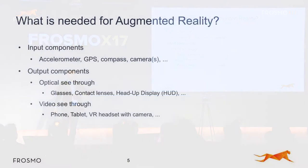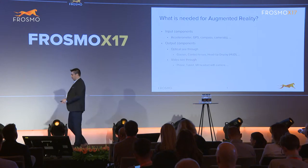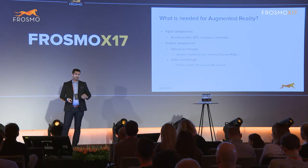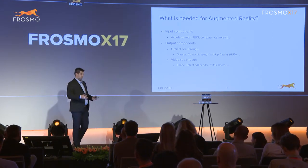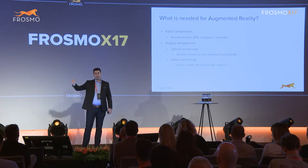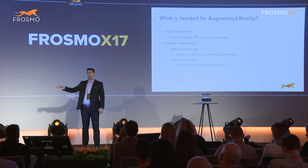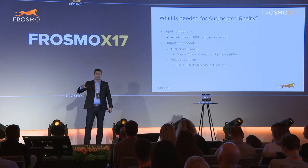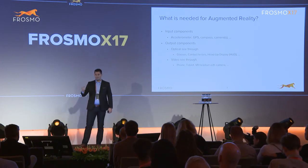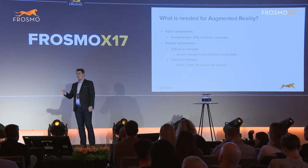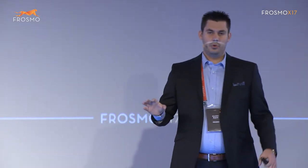What is needed for this augmented reality to show you different things where you are? Obviously, we need to have some kind of input components. We need to have sensors, and these sensors can be rigidly placed on the device or connected wirelessly or with wires. And if we want to get the augmentation out of the device, we need to have some kind of output components, based on what the device is doing. If we make it simple and talk only about visualization, then there are kind of two main groups.